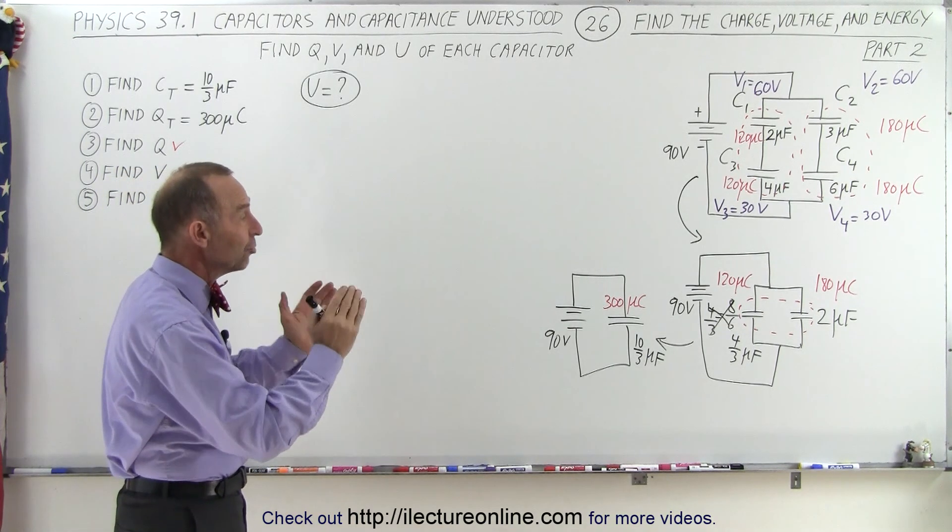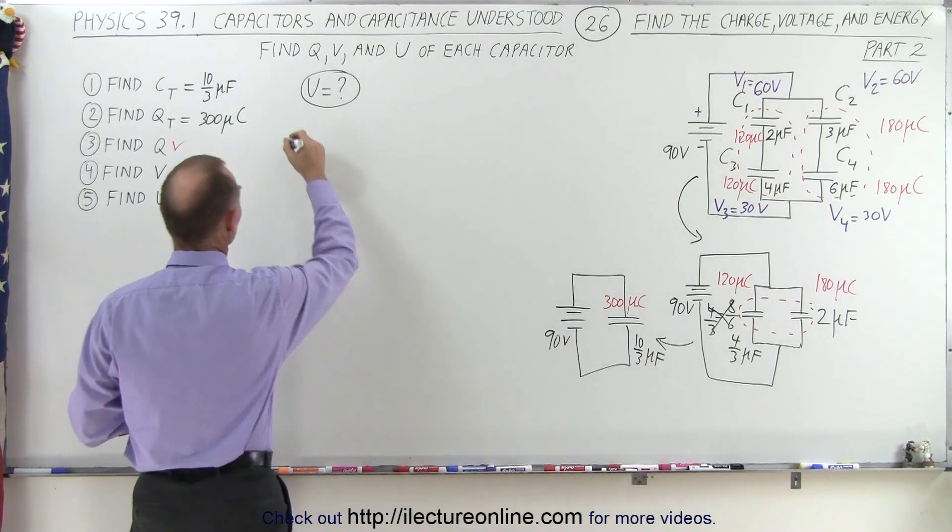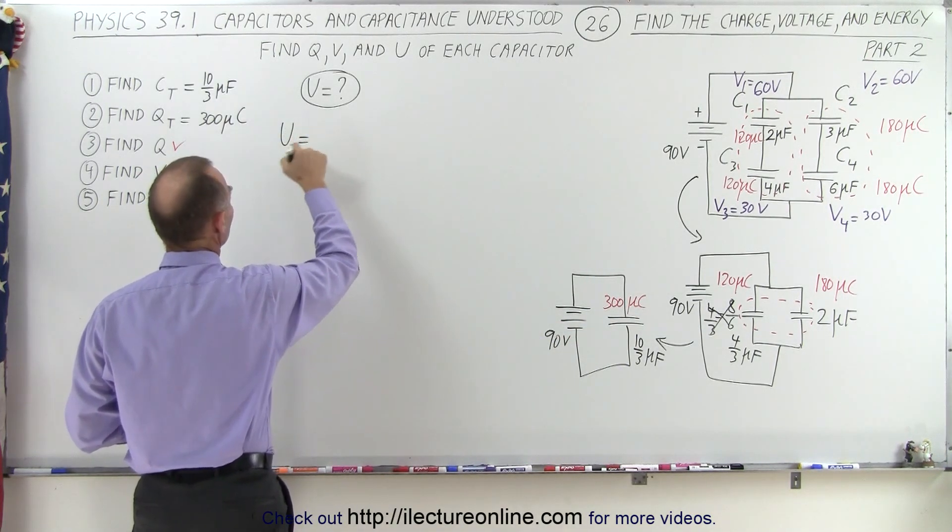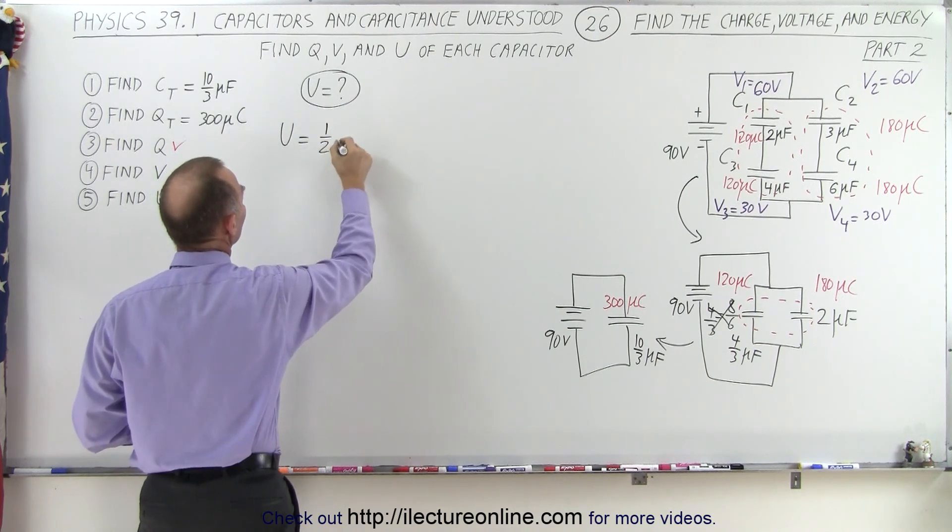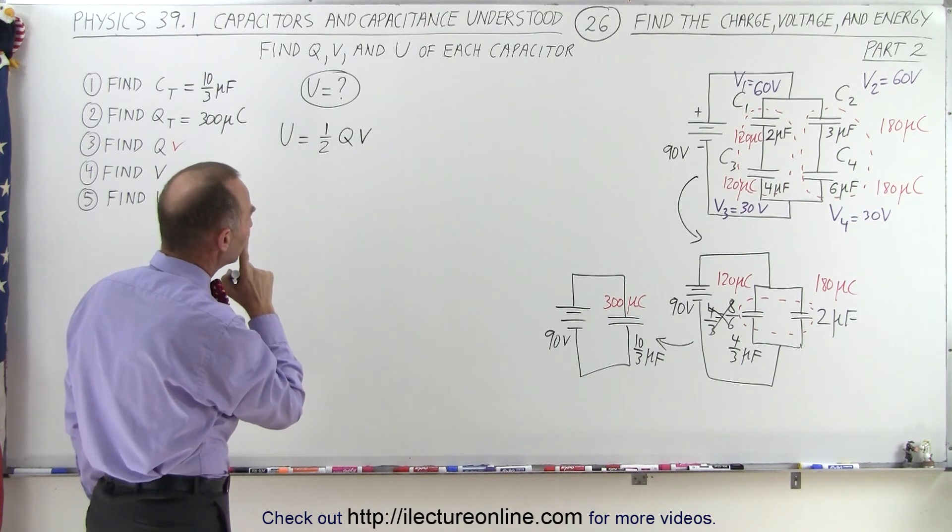Now we're going to determine the energy on each of the four capacitors. But before we do that, let's find the energy of the equivalent circuit. The energy can be found as follows: U, which stands for energy, is equal to one-half the charge times the voltage. So one-half QV.